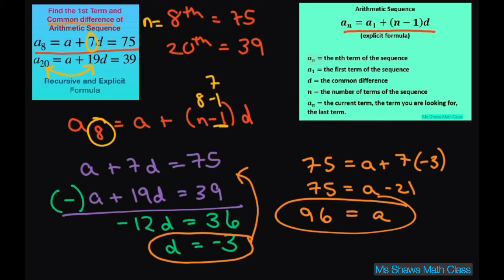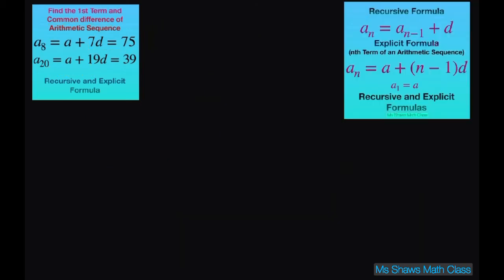Now let's just write our formulas. So the recursive formula is actually the easiest. All you do for the recursive formula is just write A sub N equals A sub N minus 1. And then you write your D. So your D is going to be minus 3. So that's your recursive formula.